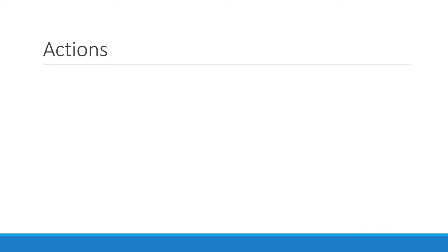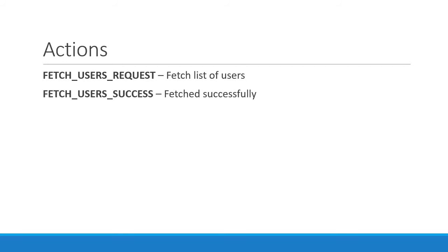Next let's talk about the actions. We are going to have three actions in our application. The first one is to fetch the list of users from the API endpoint — the action type would be FETCH_USERS_REQUEST. The second and third actions are dependent on this first action. If the data was fetched successfully we have an action with the type FETCH_USERS_SUCCESS. If there was an error fetching the data we have an action with type FETCH_USERS_FAILURE.